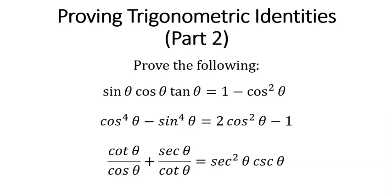Hi everyone, it's Mr. Hamilton here. This is the second video about proving trigonometric identities. In the first video, I went over what identities are, why trigonometric identities, some strategies, how to prove them, and then proving some basic ones. This one is a follow-up to that. If you haven't seen that video already, check it out in the description below. If you have, join us as we prove these three examples.